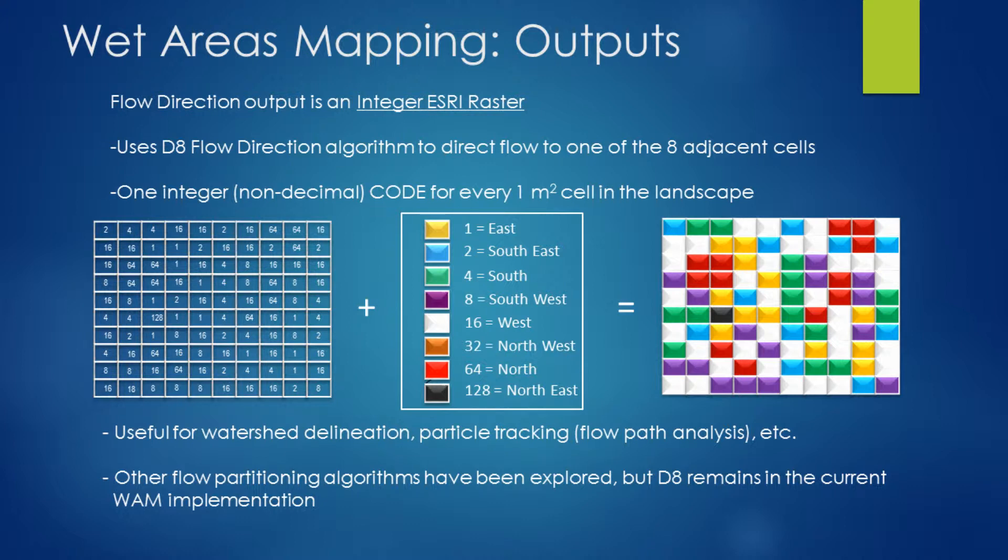When we bring in a flow direction raster, it doesn't look like much — it looks very noisy and doesn't mean a lot to us visually. But these datasets are very useful within different GIS software suites that understand the logic of the flow direction codes implemented. This is a fairly standard coded flow direction scheme used by our GIS as well as other suites like GRASS.